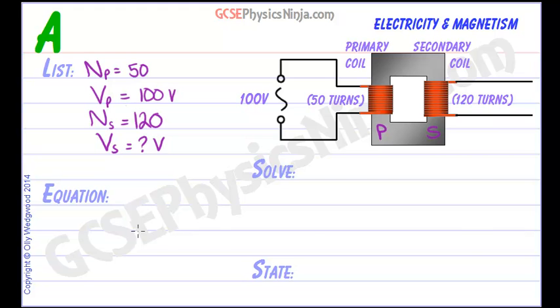The equation we're going to use is the turns voltage equation for a transformer and I prefer to use this version where we have the secondary on the top. So we have the secondary voltage divided by the primary voltage is the same ratio as the secondary turns divided by the primary turns.